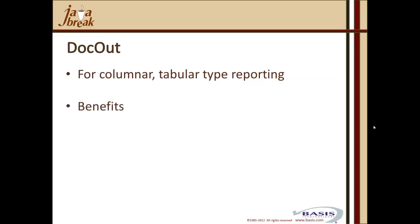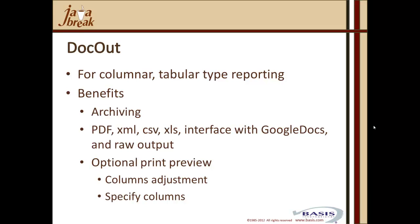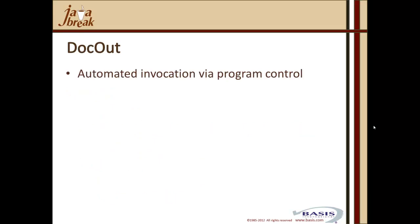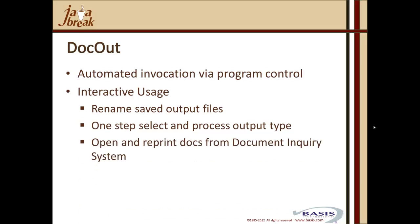Dockout is perfectly suited for columnar and tabular type reporting. The benefit you get is built-in archiving functionality — you don't have to write a single line of code for that. Output types are embedded within the Dockout object: PDF, XML, CSV, XLS, and an interface to Google Docs, along with the ability to present raw output for third-party tools. You have optional print preview where you can do column adjustment and specify which columns to show. You can automate output via program control with no UI, or have interactive usage where the user can rename and save output files.